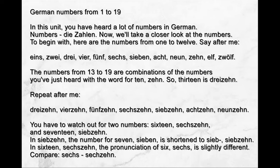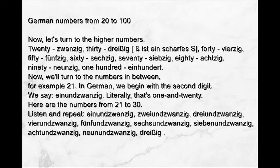Continuing: achtzehn, neunzehn, zwanzig. Now the tens: zwanzig (20), dreißig (30), vierzig (40), fünfzig (50), sechzig (60), siebzig (70), achtzig (80), neunzig (90), hundert (100).